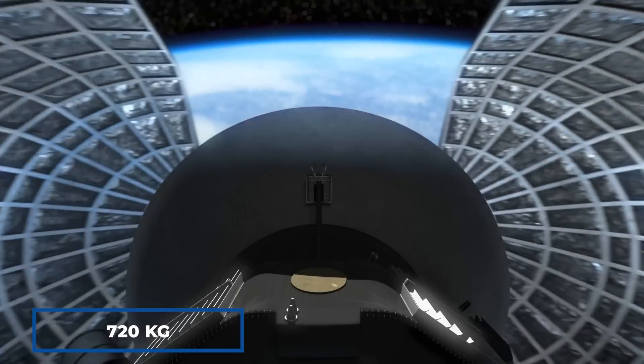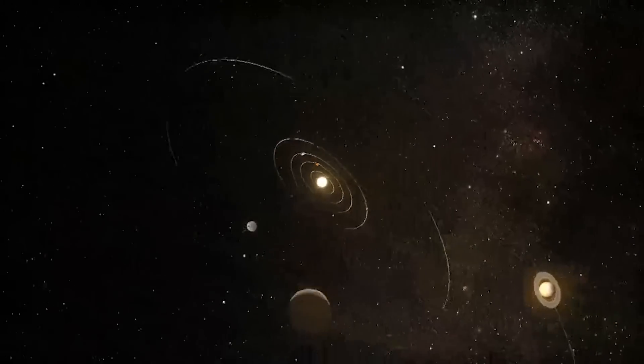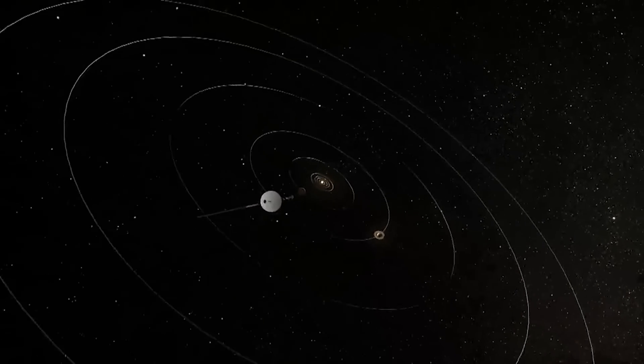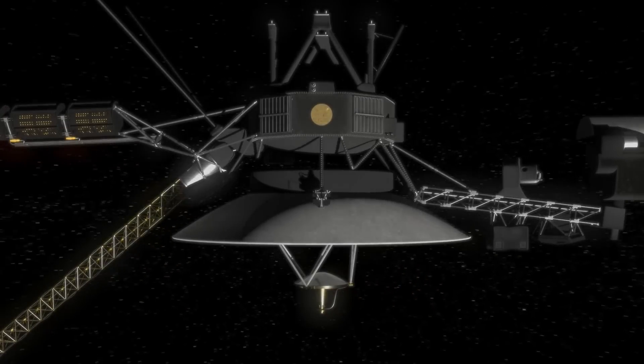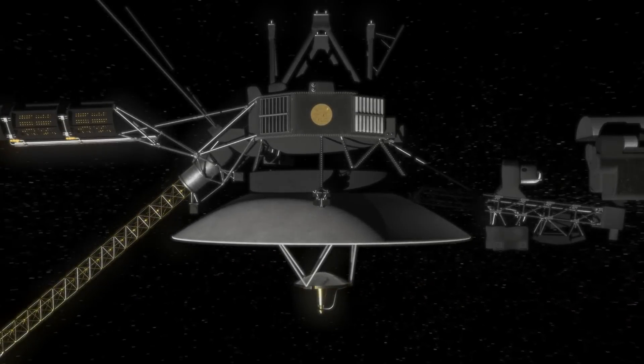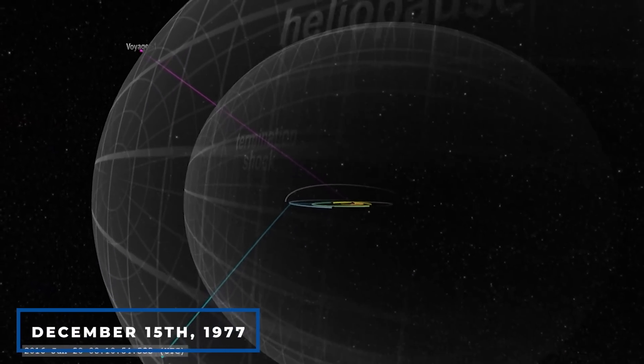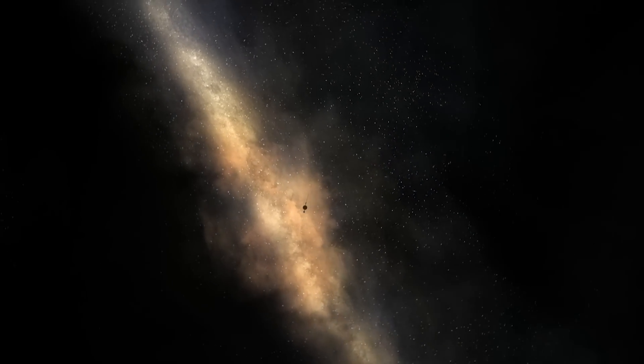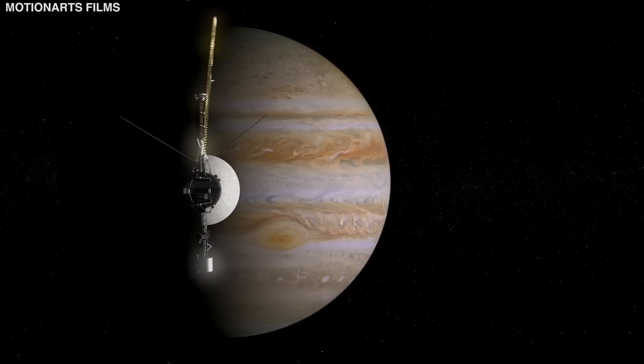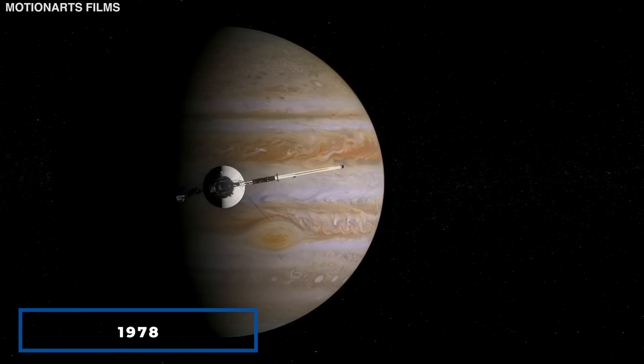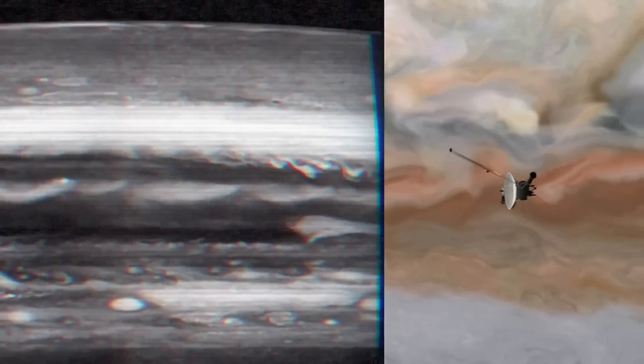Weighing in at 720 kilos, roughly the weight of a small car, these spacecraft were launched during a rare alignment of outer planets that provided a slingshot effect to propel them further into space. Although both had traveled at different speeds and trajectories, Voyager 1 was able to surpass its identical twin on December 15th, 1977, becoming the primary source for space-related discoveries ever since. Its first mission was a Jovian imaging mission in 1978 when it was around 265 million kilometers from Earth.